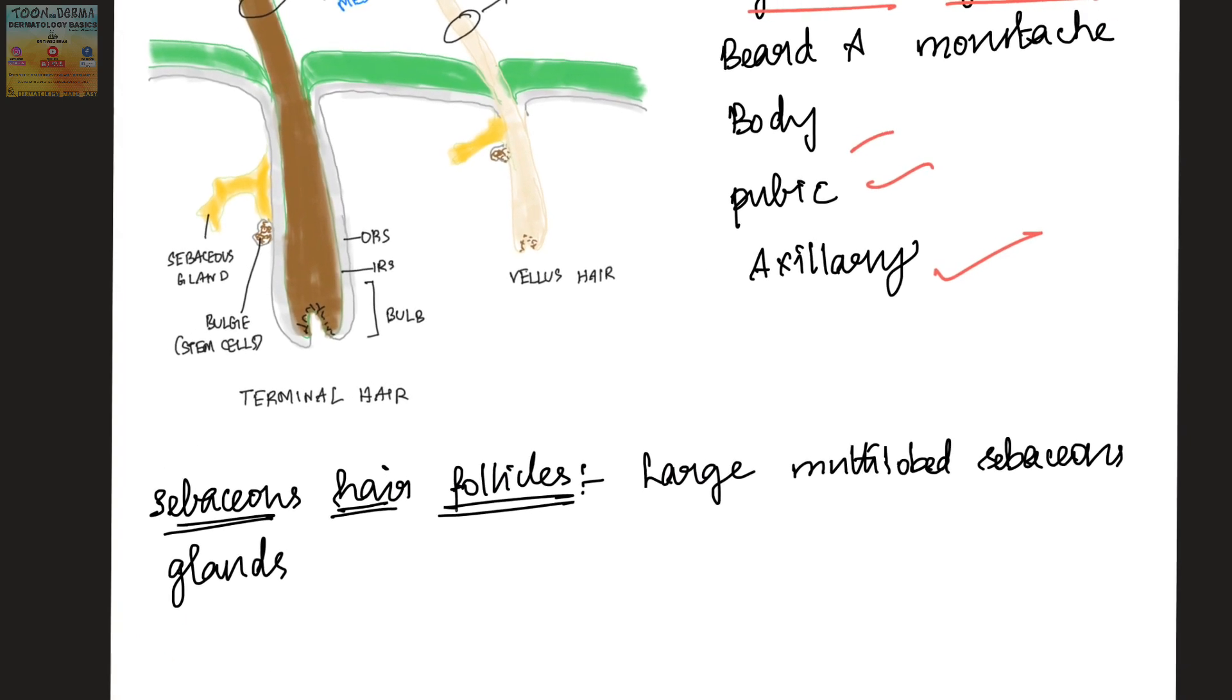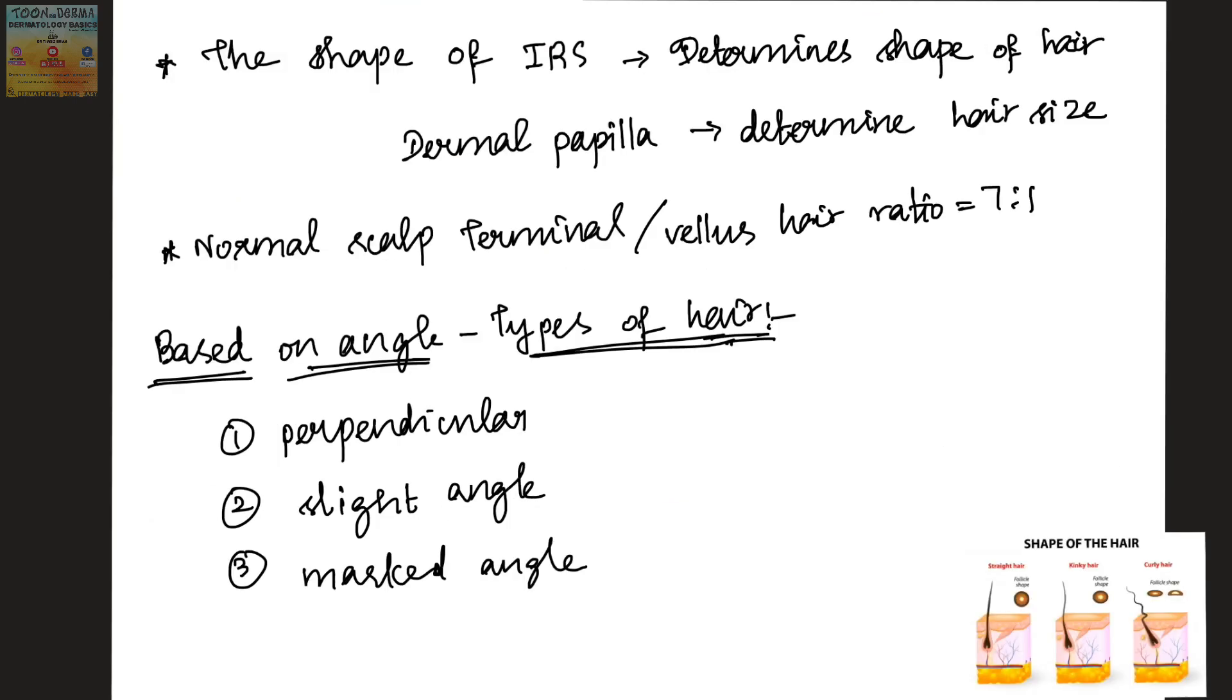Sebaceous hair follicles are hair follicles associated with large multi-lobed sebaceous glands. The shape of the inner root sheath determines the shape of the hair, whereas the dermal papilla determines the hair size. The normal ratio of terminal hair to vellus hair in scalp is around 7 to 1.